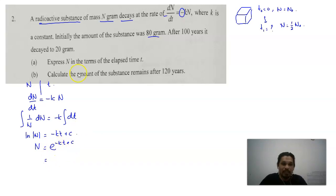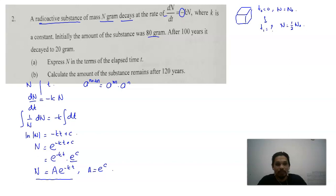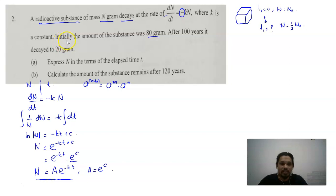Using the rules of indices where a to the power of m plus n equals a to the power of m times a to the power of n, we get e to the power of negative kt multiplied with e to the power of C. Since e to the power of C is a constant, we simplify to N equals A e to the power of negative kt, where A equals e to the power of C. This is the equation for this question. N stands for the current mass in grams of the radioactive substance.